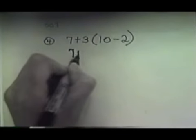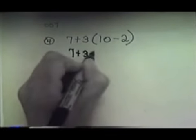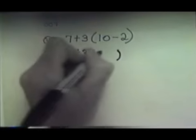So we'll write down 7 plus 3. And when we do what's in parentheses, we get 8.